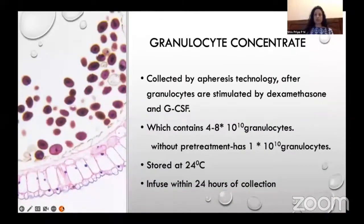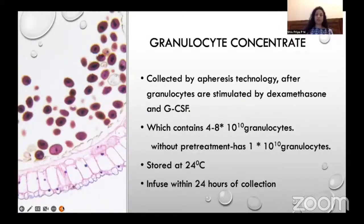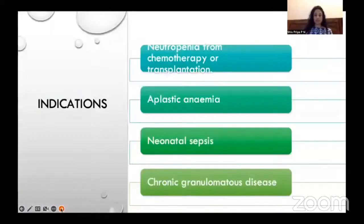Granulocyte concentrate: granulocytes are WBCs and other cells collected by apheresis technology after granulocytes are stimulated by dexamethasone and granulocyte colony-stimulating factor. Without pretreatment it has 1×10¹⁰ granulocytes, but after pretreatment with dexamethasone and G-CSF it contains 4 to 8×10¹⁰ granulocytes. Stored at 24 degrees centigrade, it must be infused within 24 hours of collection. Main indications are neutropenia from chemotherapy or transplantation, aplastic anemia, neonatal sepsis, and chronic granulomatous disease.